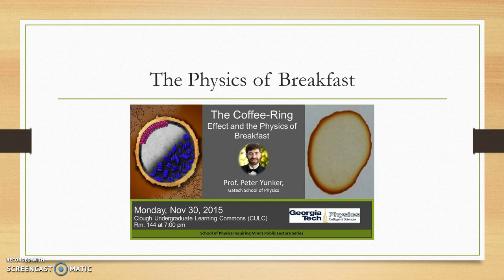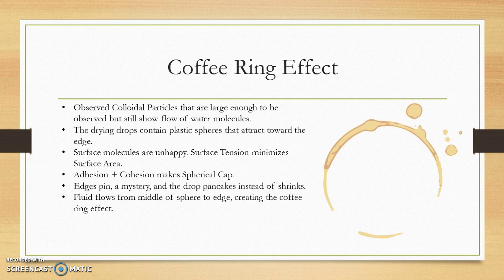The first thing we discussed was the coffee ring effect. Professor Junker explained why particles move towards the outside of a coffee stain. He explained how adhesion and cohesion make a spherical cap. This cap drops like a pancake instead of shrinking, and the edges stay where they are — they kind of pin to the table, which is a modern mystery.